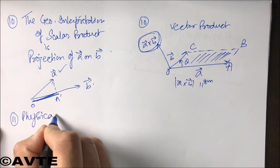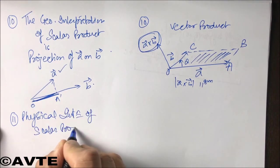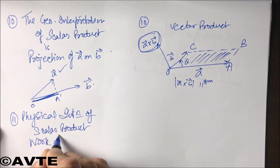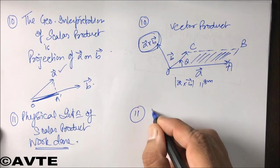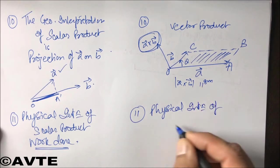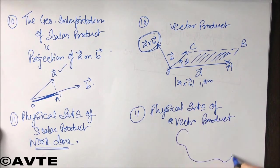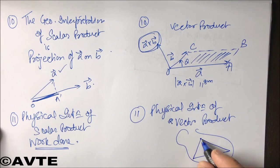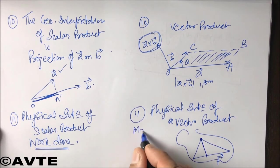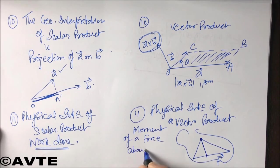The physical interpretation of scalar product is work done, that is force dot displacement. Whereas the physical interpretation of vector product is moment of a force about a point - force into the perpendicular distance. So it is moment of a force about a point.